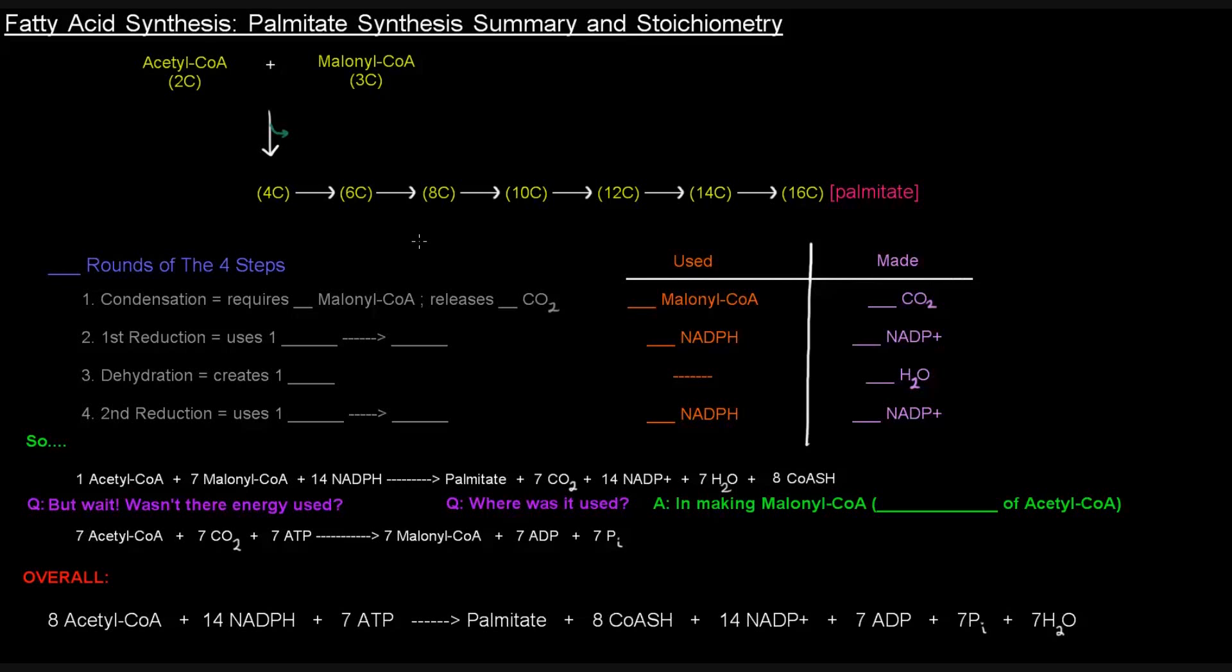So in this video, I want to just summarize the stoichiometry of Palmitate synthesis. The first thing that we did was we took an acetyl-CoA and a malonyl-CoA, brought them together to make our four-carbon molecule.